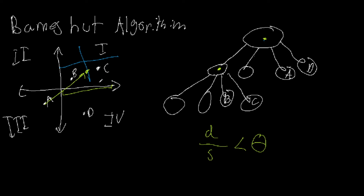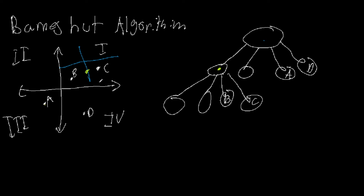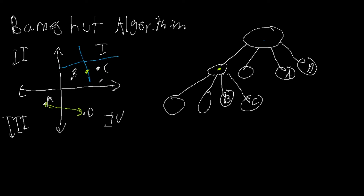Continuing to traverse the tree — the next node is empty, so we skip it. The node after that is the same quadrant as A, so we skip it too. We arrive at node D, which has no children, so we simply calculate the force attraction between A and D and add the vectors. Searching through a balanced tree has a time complexity of O(log n), and since we search through the tree once per particle — n particles total — the overall complexity is O(n log n). This is a subset of O(n²), so it is generally faster.